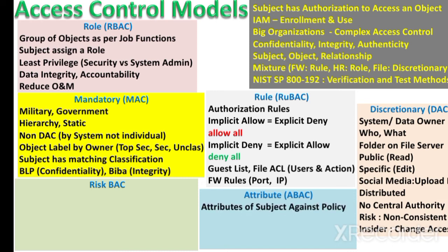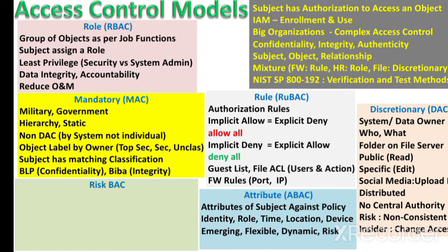The next model is attribute-based access control (ABAC), which is closely linked with the risk-based access control model. The attributes of subjects are matched against a policy at a granular level to decide whether a subject can access an object. These attributes may include the identity of the subject, the role, the time, location, and the device the subject is using. It is a new and emerging access control model that is very flexible and dynamic.